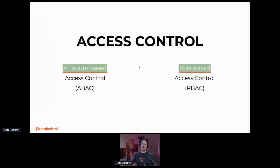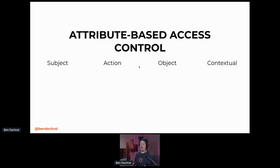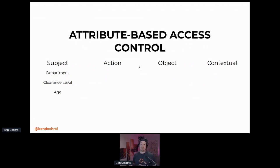Let's talk about access control. It comes in two major flavors. By and large, when you're looking at access control, you have attribute-based and role-based access control. Attribute-based access control focuses on four specific sets of information used to determine whether someone has access to an endpoint, a system, or a process. The first is the subject — information about the user making a request. Things we might know about them include the department they work in, their clearance level in government, or their age in a social media context.